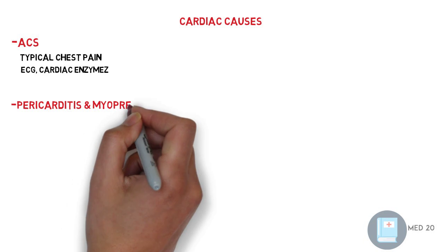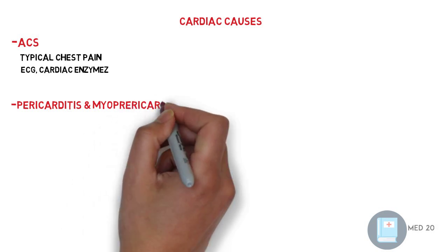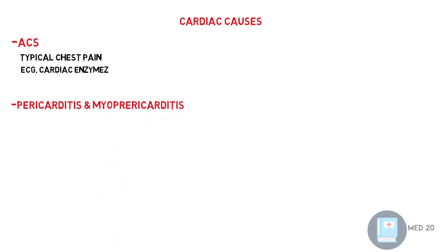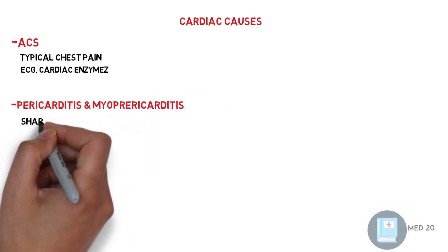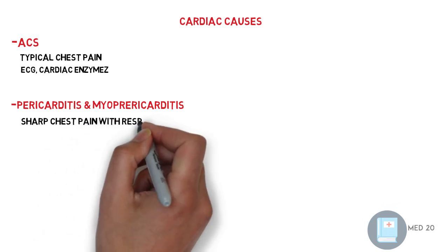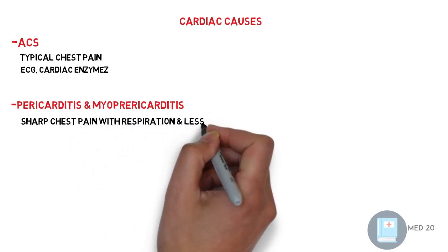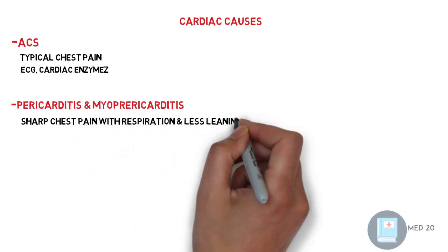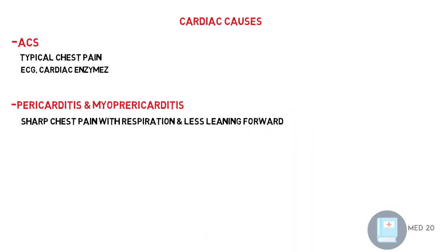Pericarditis, or myopericarditis, which presents with sharp chest pain, aggravated by respiration, and relieved by leaning forward. There are four criteria to diagnose pericarditis: one, clinical — the typical chest pain; two, the pericardial rub; three, ECG changes; and four, the echo.